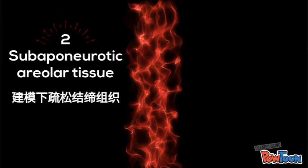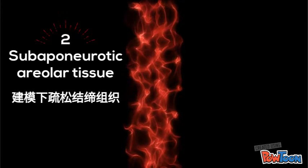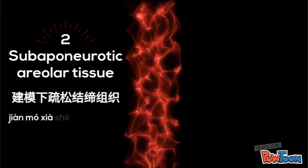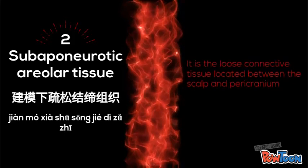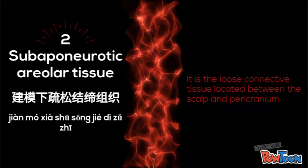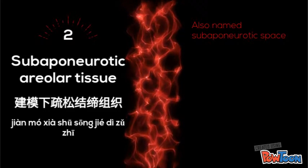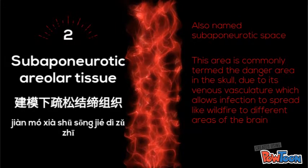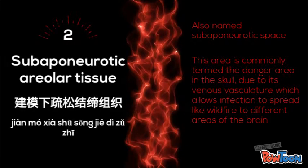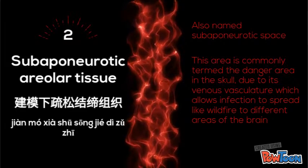Subaponeurotic areolar tissue — 肩膜下疏鬆接地组织 — it is the loose connective tissue which is located between the scalp and pericranium. It is also termed subaponeurotic space. This area is commonly termed the danger area of the skull due to the venous vasculature which allows infection to spread like wildfire to different areas of the brain.